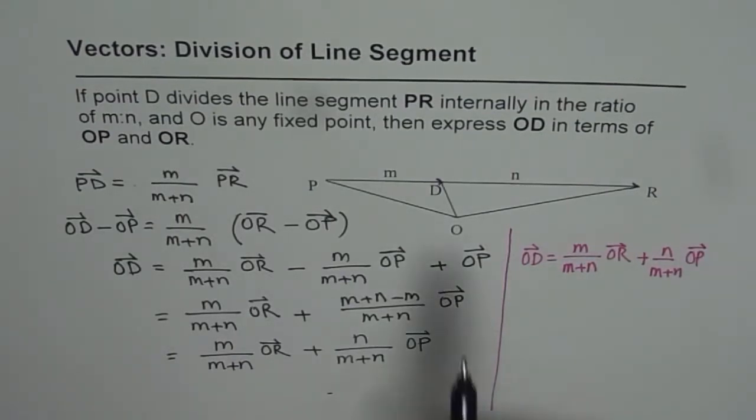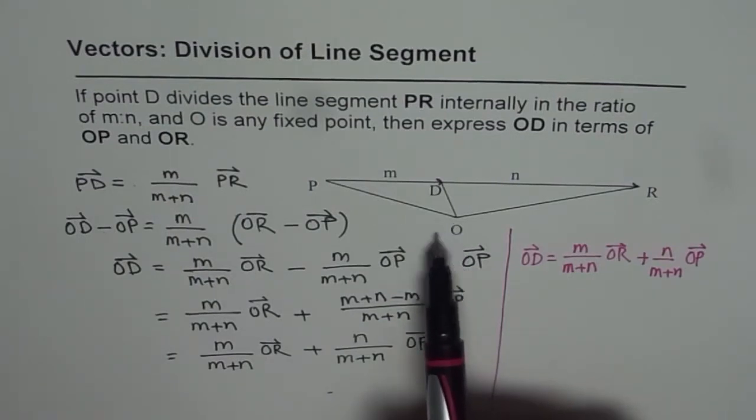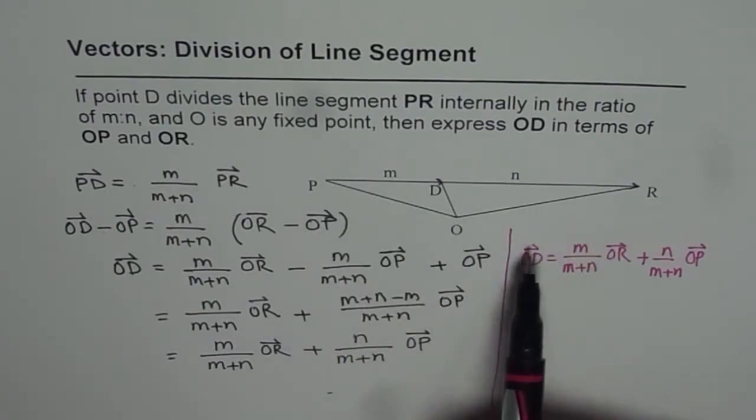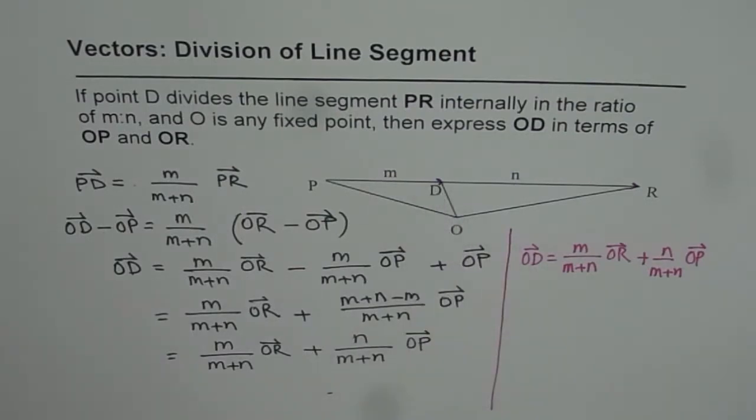Now in a given scenario, O could be the origin. In that case, OR, OP and OD becomes position vectors and therefore we can find the coordinates of point D which divides the line segment internally.